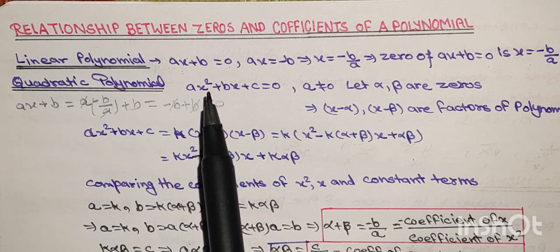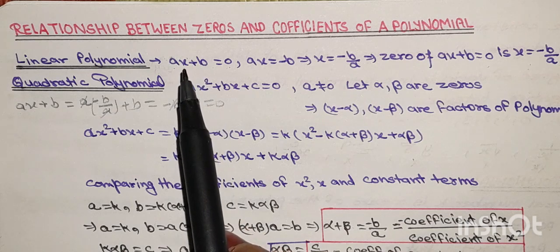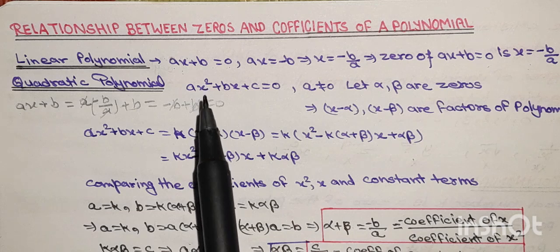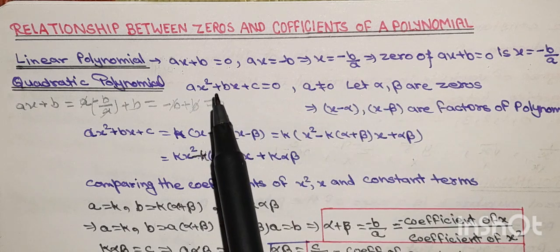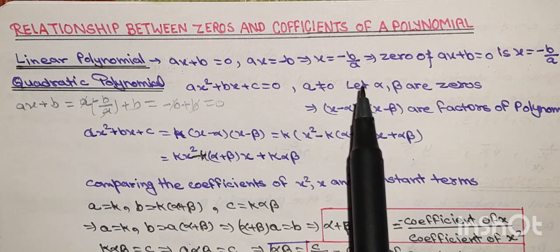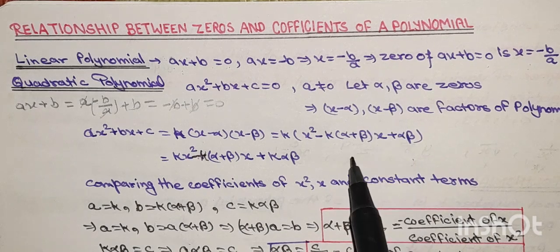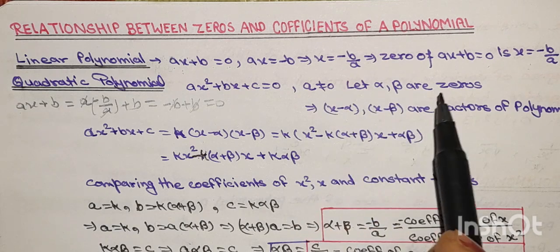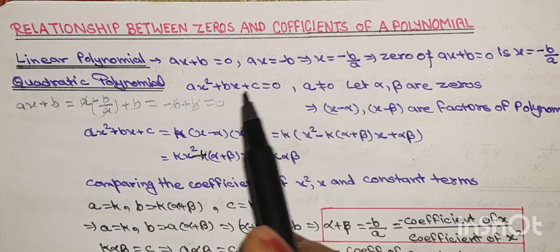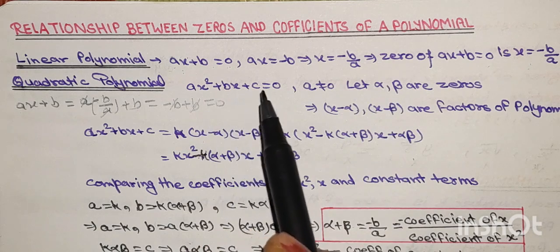Iske zeros find out karne hain toh polynomial ko equal to zero put karna hai. Yahan se directly x ki value find out nahi kar sakte jaise linear mein ki thi — iske liye ek procedure follow karna padega. Second degree ka polynomial hai toh at most do zeros ho sakti hain. Maan lijiye alpha aur beta zeros hain is polynomial ke liye — yani x ke place par alpha put karenge toh expression 0 ke equal ho jaega, aur x ke place par beta put karenge toh bhi expression 0 ho jaega. Alpha aur beta Greek letters hain.